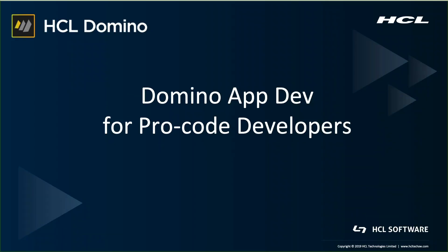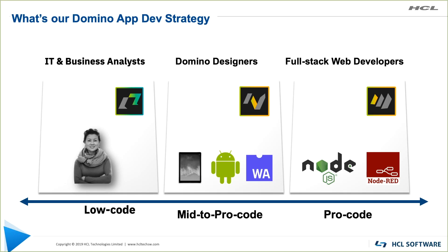Welcome to the session: Domino App Dev for Pro Code Developers. In our journey to shape the future of application development, HCL Domino 11 provides new capabilities for all types of developers. Power users, IT professionals, or business analysts can build new applications with just a few clicks using HCL Volt, our new low-code solution. Domino applications can now run on new platforms with Nomad — unmodified on mobile devices like iOS, and soon Android and Chrome OS — with built-in encryption and offline support. With Nomad Web Assembly, the same Domino apps can run in the browser, powered by the trusted security of Domino.